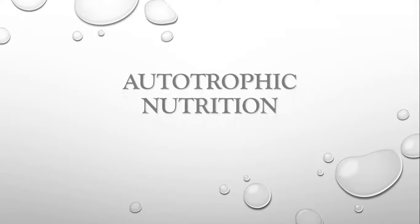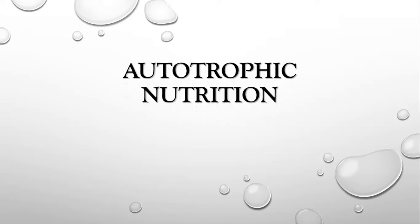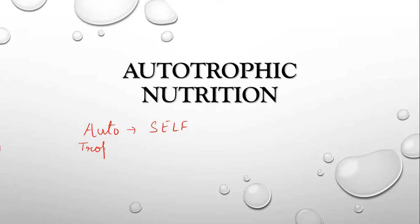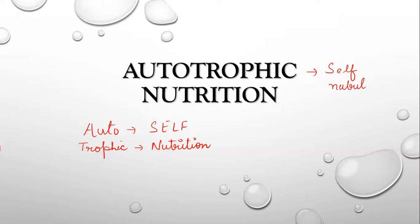Today's topic is autotrophic nutrition. Autotrophic nutrition is a type of nutrition where an organism prepares its own food from simple inorganic materials like water, mineral salts, and carbon dioxide in the presence of sunlight. The term autotrophic is formed by two terms: auto, which means self, and trophic, which means nutrition. So the literal meaning is self-nutrition — an organism capable of providing nutrition to itself.